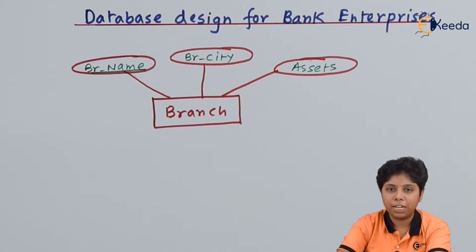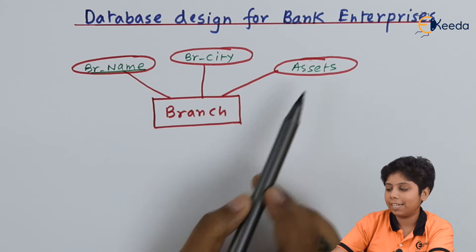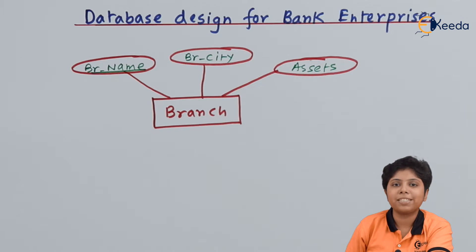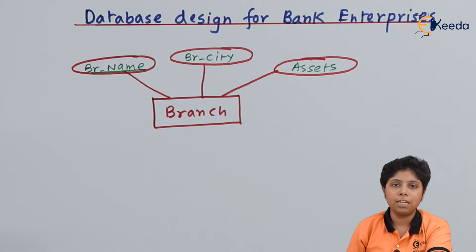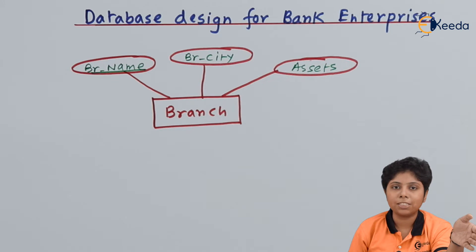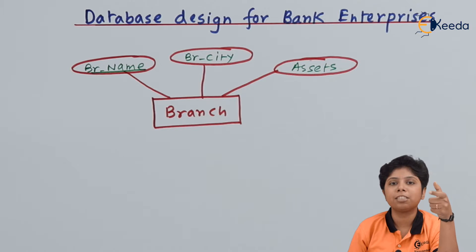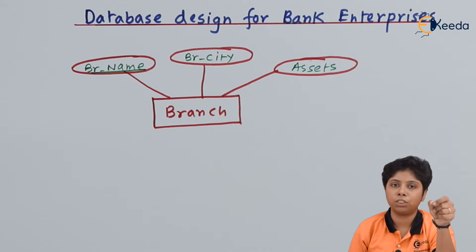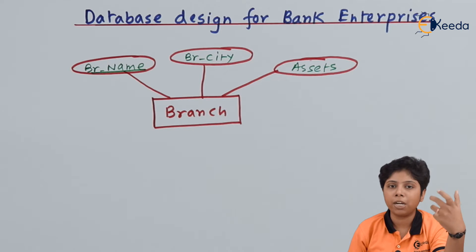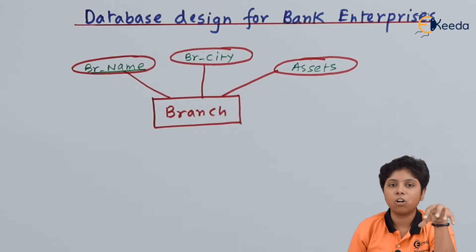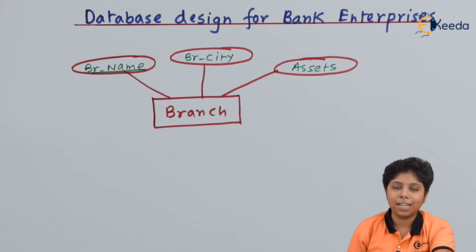Now we will construct the entity sets. The first entity is Branch, with attributes branch name, city, and assets. Branch name is the primary key because a bank cannot have two branches with the same name — even if a city has many branches, all branch names must be unique. For example, Brooklyn could have branches named Peri, Richer, and India.